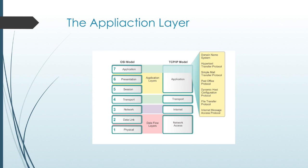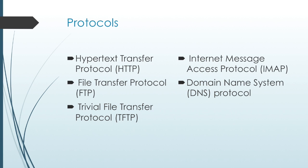Application layer protocols are used to exchange data between programs running on their source and destination hosts. Some of the most widely known application layer protocols include Hypertext Transfer Protocol, File Transfer Protocol, Trivial File Transfer Protocol, Internet Message Access Protocol, and Domain Name Systems.